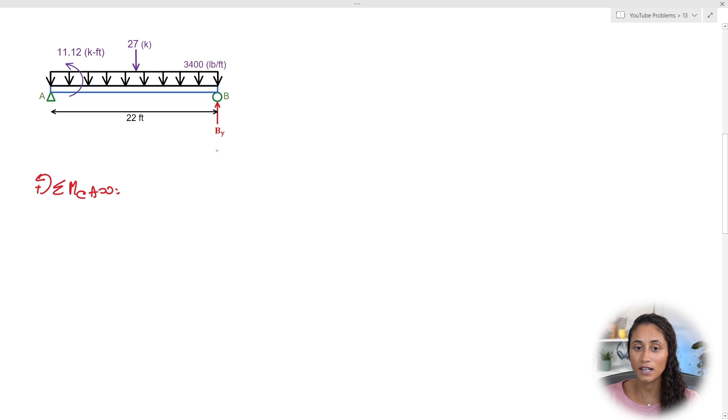Now note here that I drew By going up. So if we get By positive, that means our assumption is right. But if By turns out to be negative, that means our assumption is wrong and By should be going down.